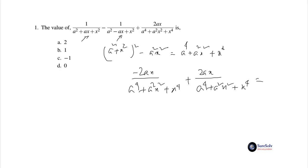When we add 2ax/(a⁴ + a²x² + x⁴), the result equals 0. The two terms will cancel out. The answer will be option d) 0. The solution could be easily carried out in mind. Let's see the second problem.